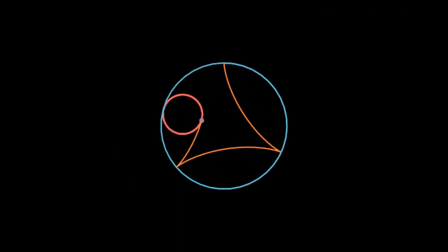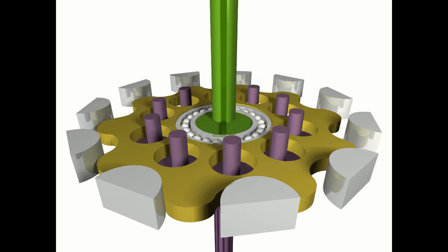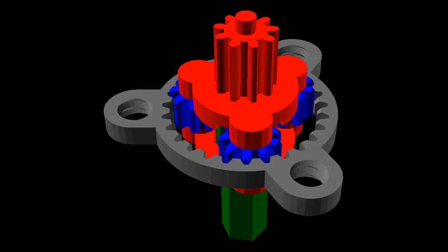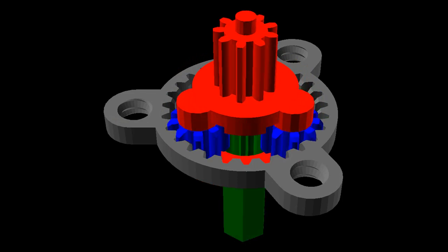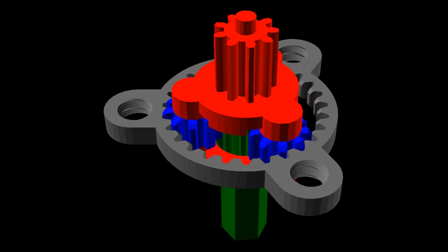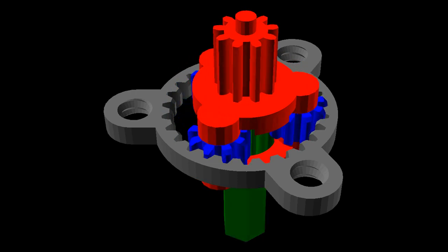Epicycloids and hypocycloids show up frequently in engineering. For instance, two of the most common gearing systems employed today, cycloidal gearing, which is used in creating mechanical clocks, and planetary gearing, which is commonly used in the transmission systems of automobiles, aircraft, and robots, utilize the properties of epicycloids and hypocycloids.